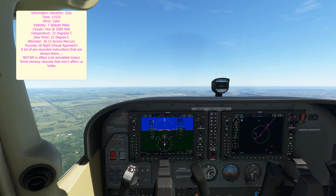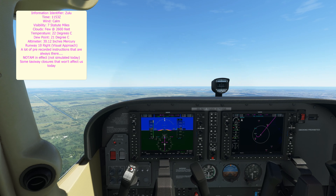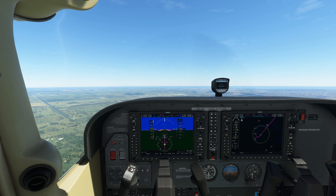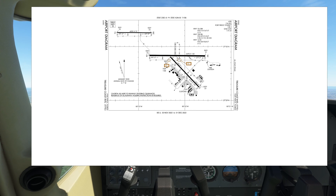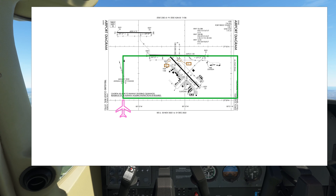We can now start to build up a picture of what instructions to expect from the tower. As we already said, we're coming in from the south-west. If we're expecting runway 10R, it's likely that we're going to be asked to join the airfield in one of two ways. Depending on traffic and other considerations, the most probable instruction is a right-hand base leg join or a straight-in approach. There is only one way to find out, and that's to stop being a wimp and call the tower.